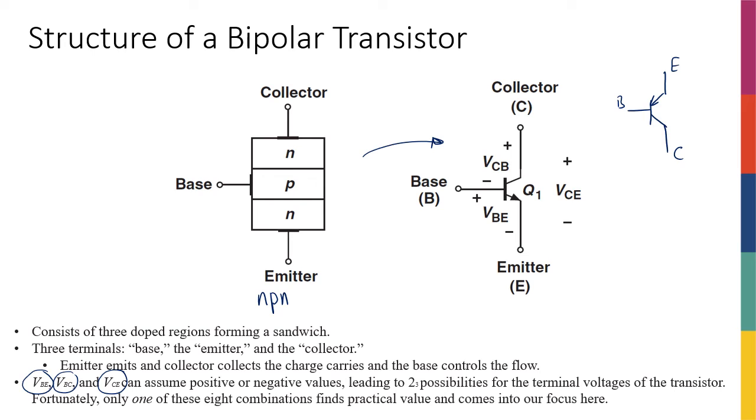You might actually think that there is a diode, for example, from base to emitter. Indeed, there is a diode, and we're going to talk about that. This is really one of the reasons that we start talking about diodes before talking about transistors, because it helps us better understand the operation of a bipolar transistor.